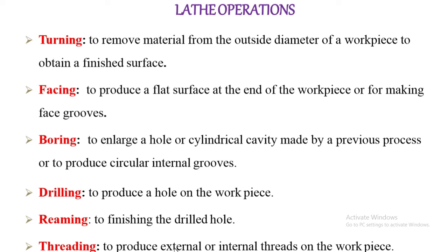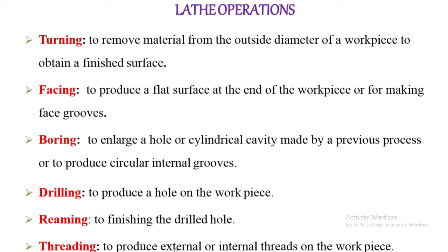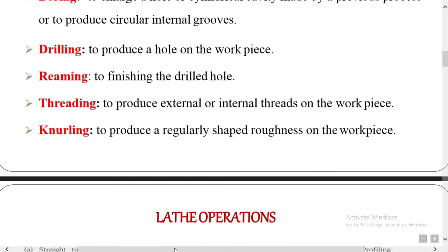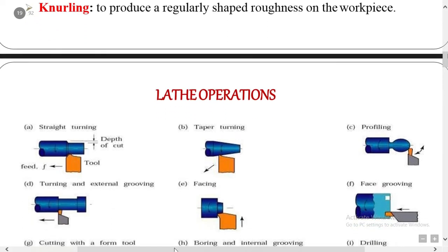Threading — to produce external or internal threads on the workpiece is called threading. Knurling — to produce a regularly shaped roughness on the workpiece is called knurling.